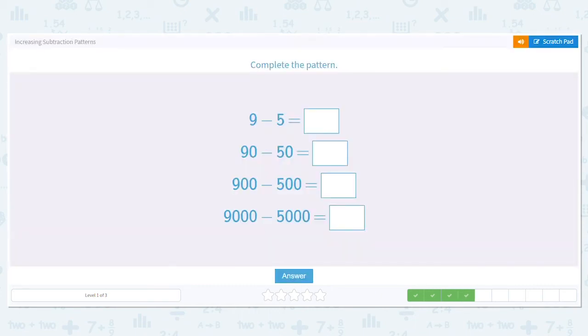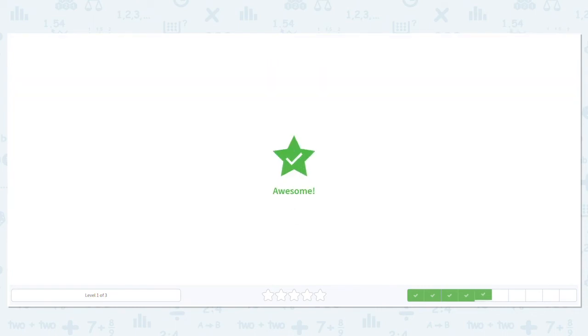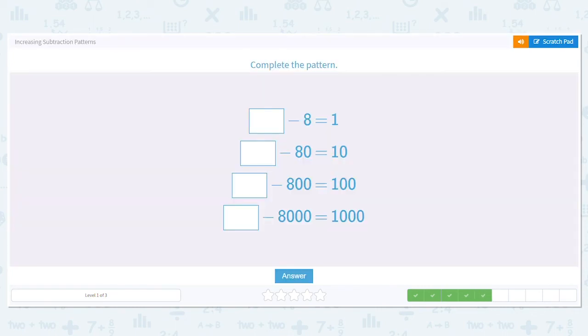Next one, 9 minus 5. We can just answer this. 9 minus 5 is 4. 90 minus 50 is what? My base fact is 9 minus 5, which is 4. And 0 minus 0 is 0. We have our pattern forming. So what would 900 minus 500 be? 400. And what would 9,000 minus 5,000 be? 4,000. You are getting this. You find the pattern. Life is good.